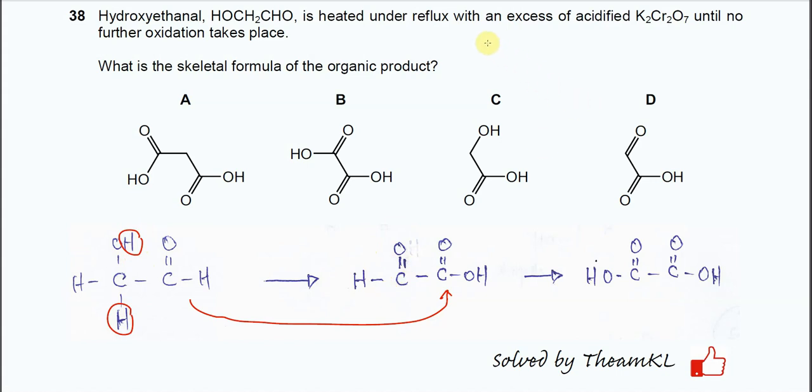Because it says that reflux with excess acidified potassium dichromate, this one will further oxidize. So this aldehyde group will further oxidize to the carboxylic acid. It will form this ethanedioic acid, a dicarboxylic acid.